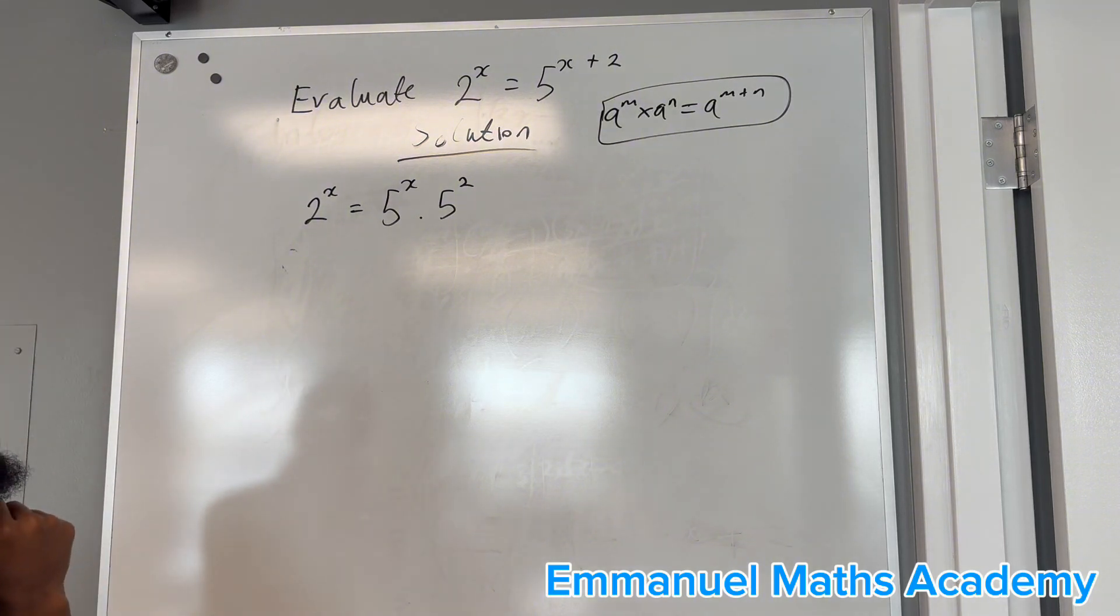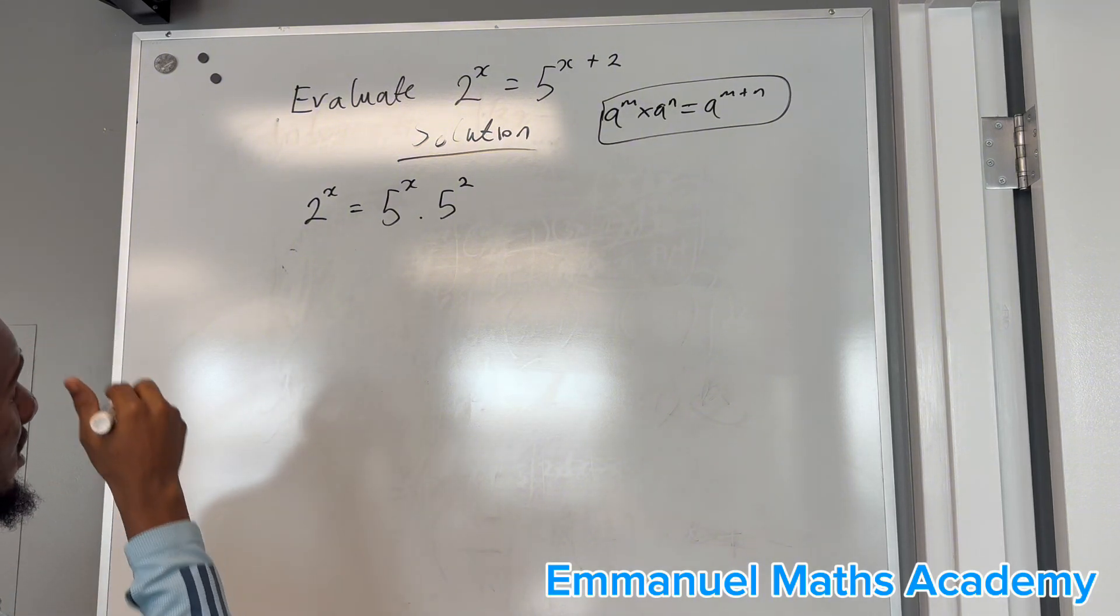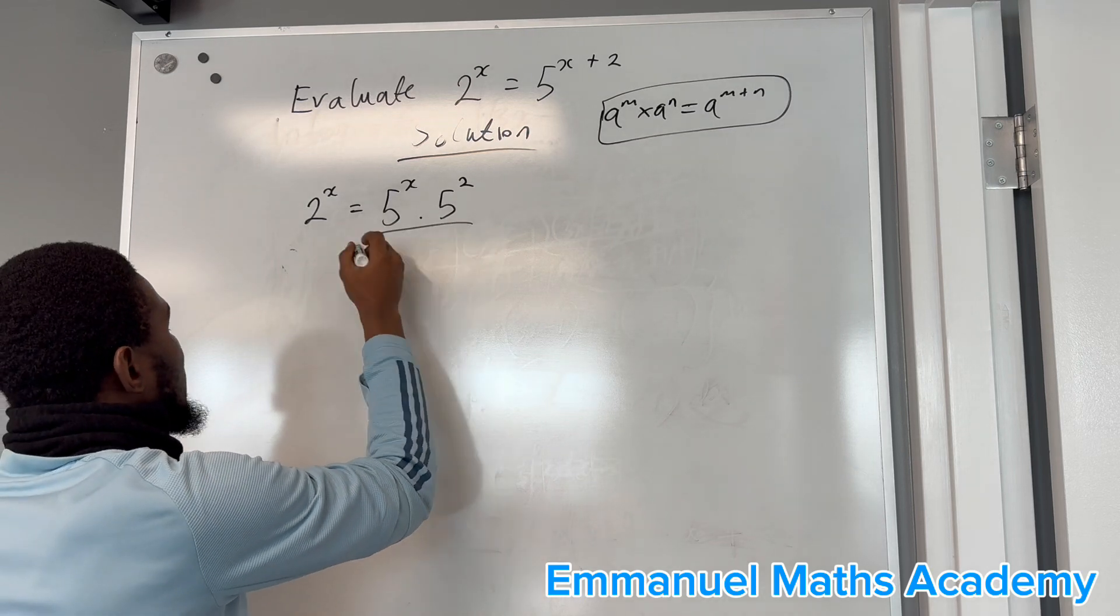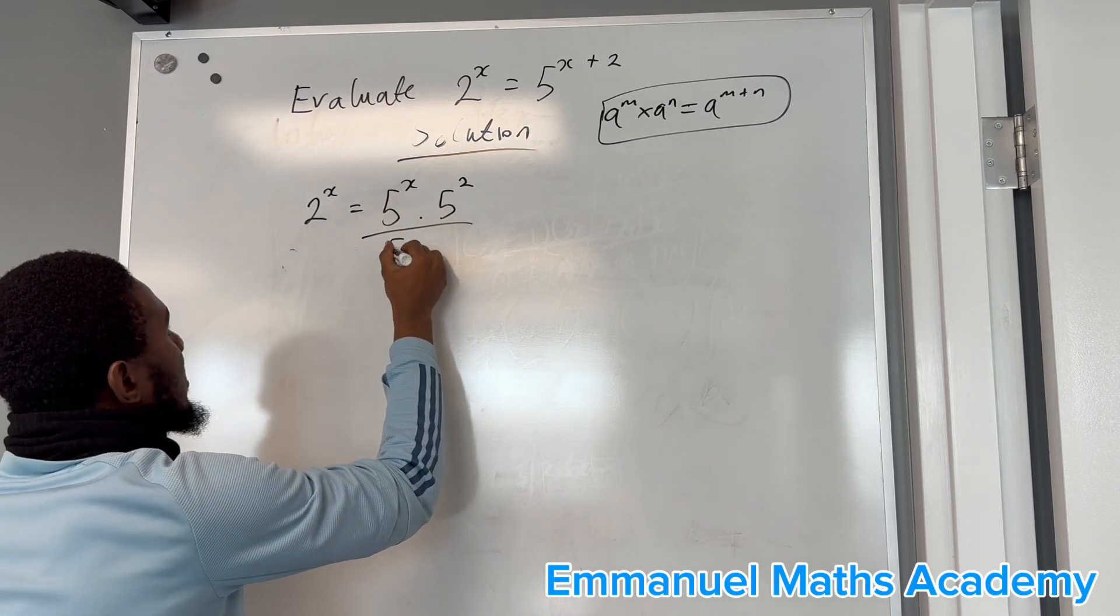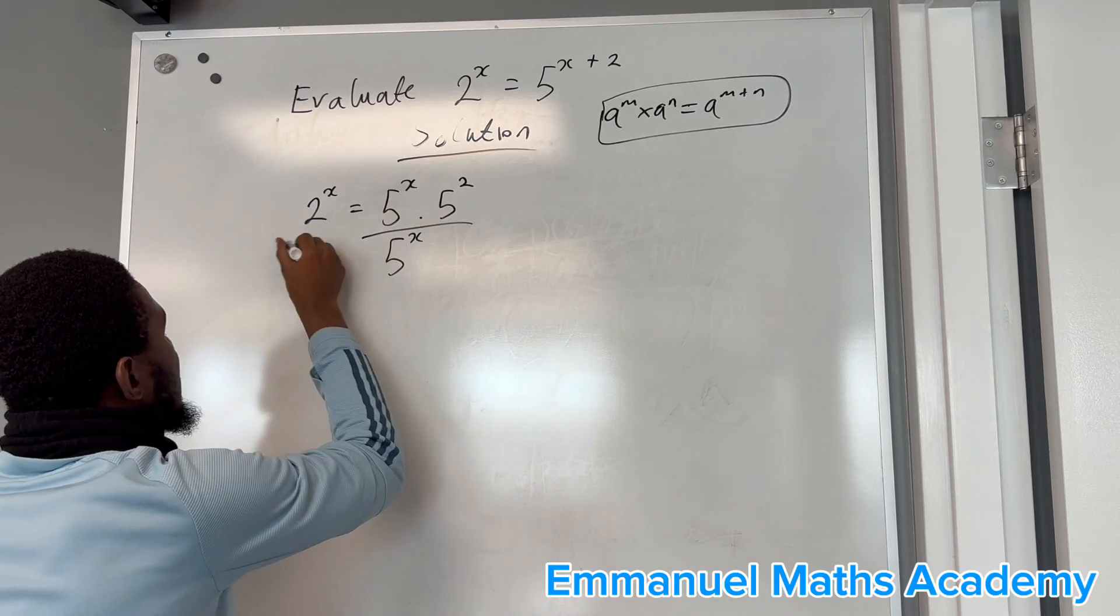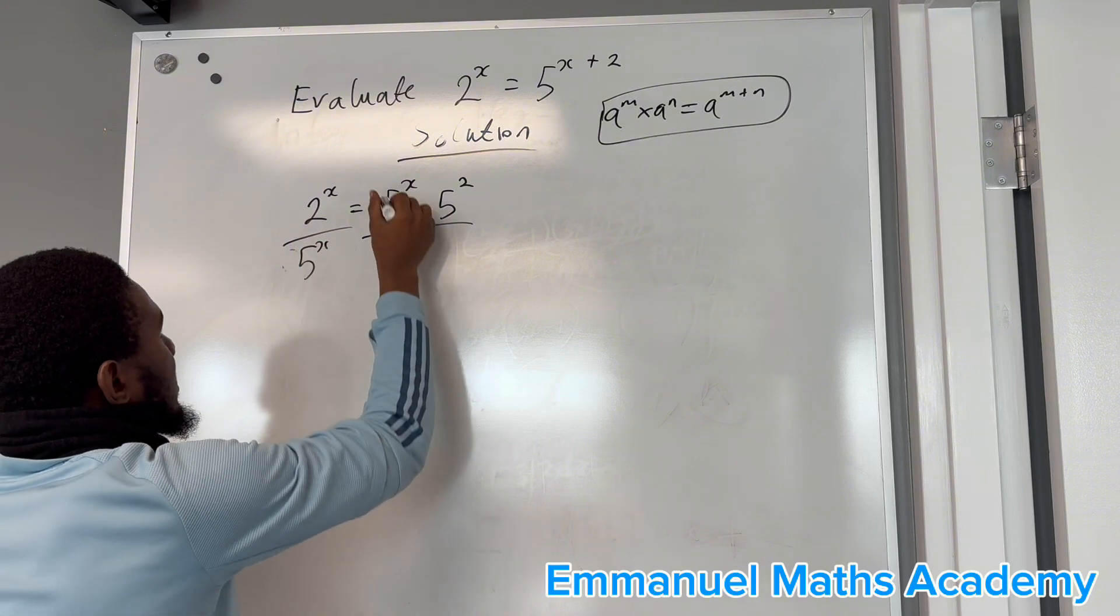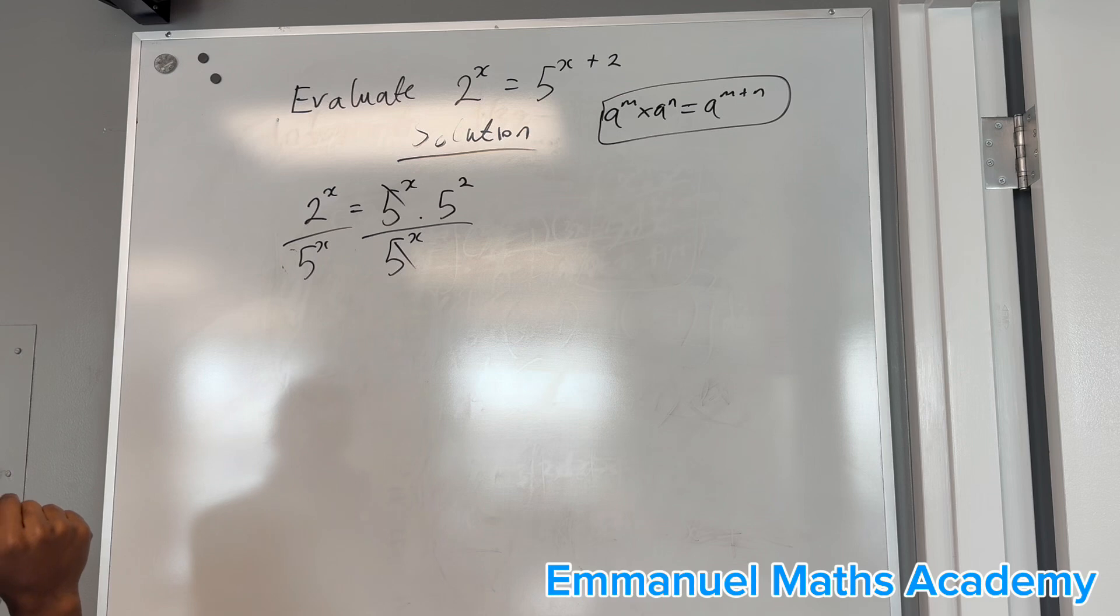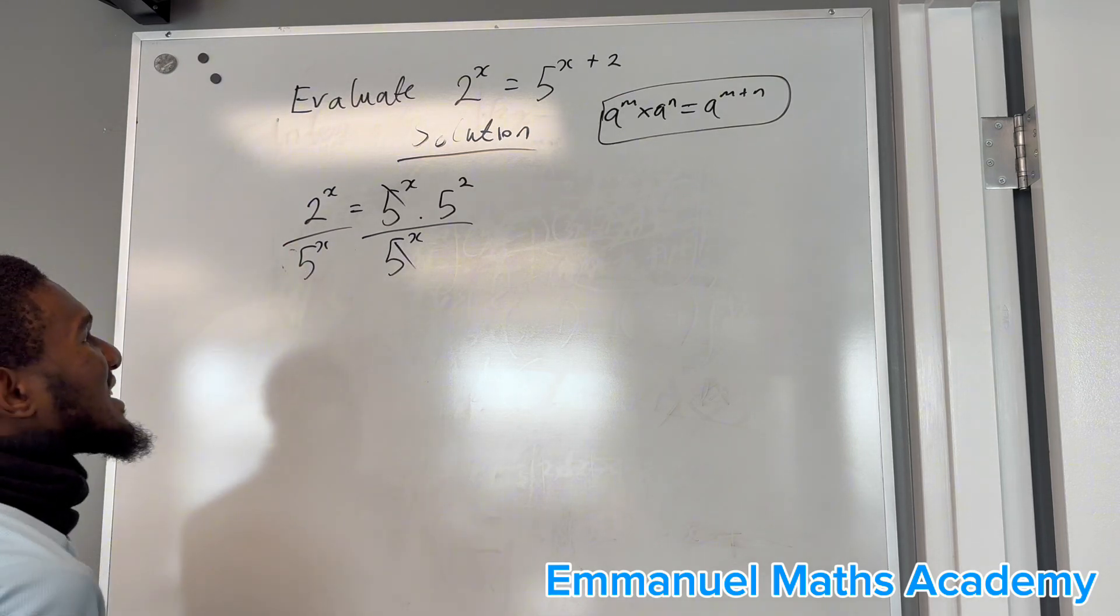What do you do next? Because we're looking for x, we can divide both sides by 5 power x. This will cancel, and you now have 2 power x over 5 power x.